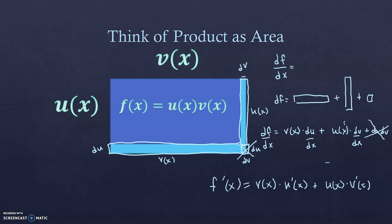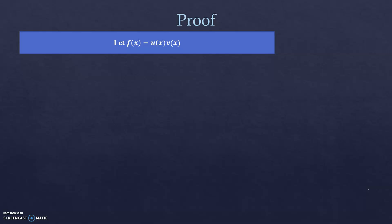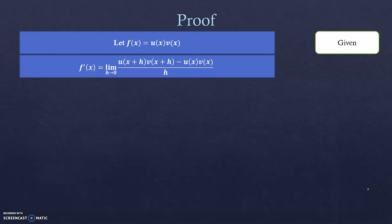Each function gets to have its derivative taken once and also gets to be left alone, because each is a dimension of one of the two rectangles. That's not a formal proof — just a visualization. Now for a formal proof: we start with the definition of the derivative, letting f(x) be the product of two functions, and use the limit as h goes to zero.